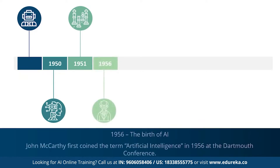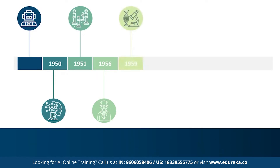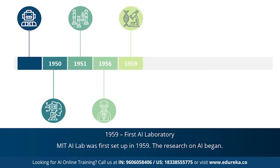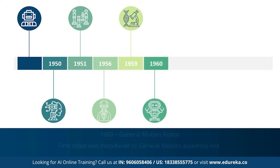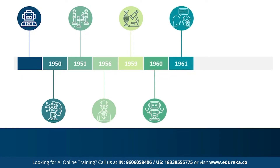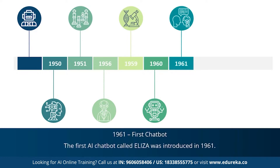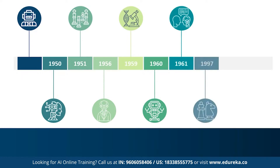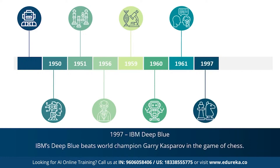1956 marked the most important year for artificial intelligence — John McCarthy first coined the term 'artificial intelligence.' This was followed by the first AI laboratory, the MIT AI lab, set up in 1959 and dedicated to AI research. In 1960, the first robot was introduced to the General Motors assembly line. In 1961, the first AI chatbot called Eliza was introduced. In 1997, IBM's Deep Blue beat world chess champion Garry Kasparov.